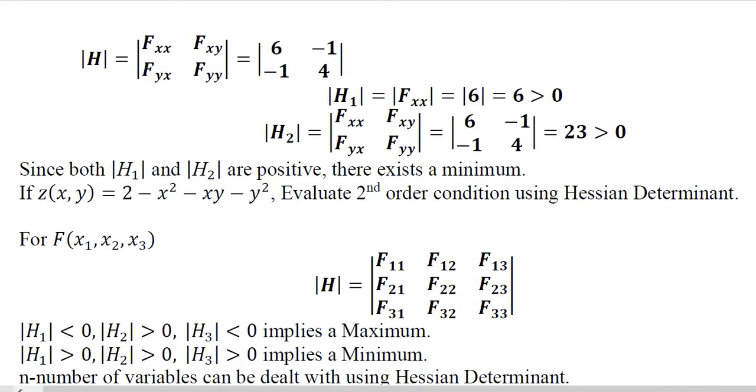In the next step I am going to put these values here. You observe that the general formula of the Hessian determinant is written and we have substituted the values here that we just found with the help of finding the first order derivative and the second order derivative.